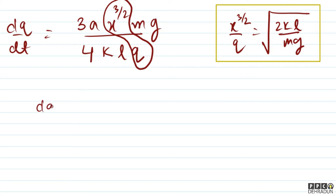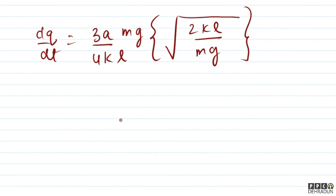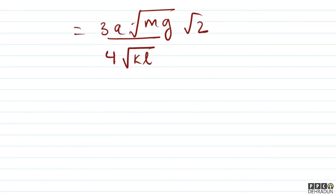तो finally dq/dt = (3a/(4kl)) × mg × √(2kl/mg) आ रहा है। इसे simplify करने पर: mg और root mg से root mg बच जाता है; k ऊपर है और root k नीचे आएगा; l भी इसी तरह आएगा। तो dq/dt = (3a/2) × √(mg/(kl)) × √2 के रूप में simplify होता है।